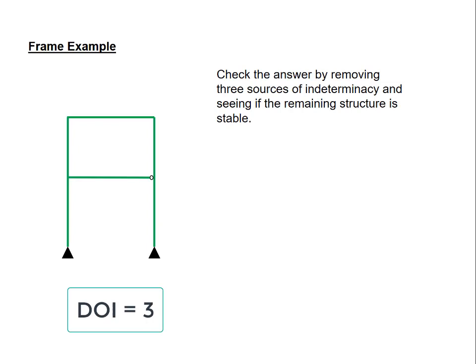We'll check the work by removing three sources of indeterminacy and seeing if the remaining structure is still stable. So one change that we can make is to change one of the pins into a roller. Now the whole frame, globally speaking, is determinate. Globally speaking, there are three unknowns, two at the pin, one at the roller. We have three equations of equilibrium for the frame as a whole. We can't remove any more external reactions, so we need to start inserting force releases. I've chosen to add the following two hinges. This results in a structure that is still stable. Making any other release would result in a mechanism. It's difficult to see that now because we haven't covered stability in detail, so we'll return to this concept when we look at stability. For now, keep in mind that you can check your answer by removing sources of indeterminacy and seeing if the remaining structure makes sense.